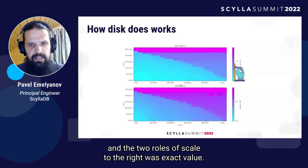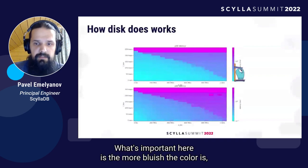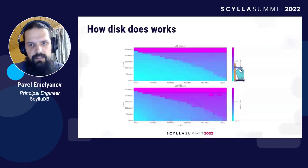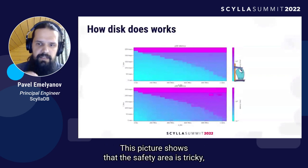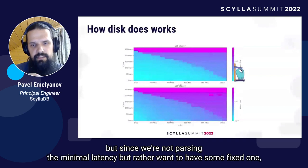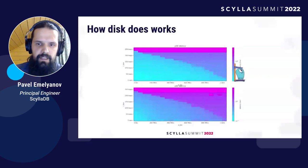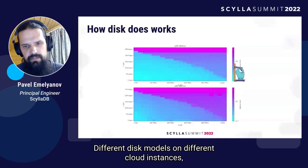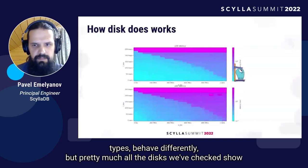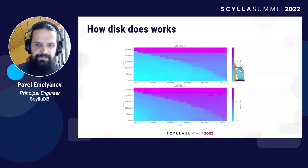The tool draws a scale to the right with the exact latency value. What's important here is: the more bluish the color, the smaller the latency. Here is where the scheduler should stay if it wants to provide good latency. This picture shows that the safety area is tricky. But since we are not pursuing minimal latency but rather want some fixed one, it's enough to stay below the diagonal line in this read-write area. And while we're here — that's not how all disks look. Different disk models on different cloud instance types behave differently, but pretty much all the disks we've checked show a profile that can be described by the mentioned diagonal line.